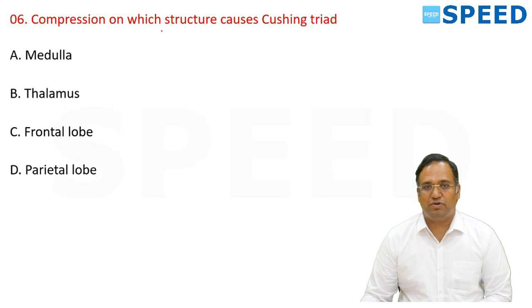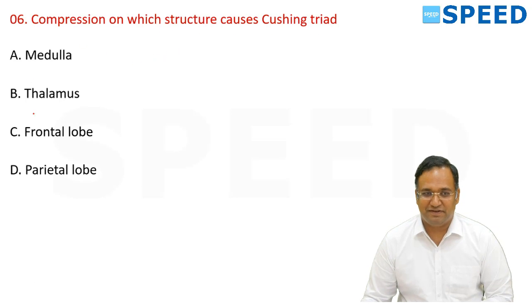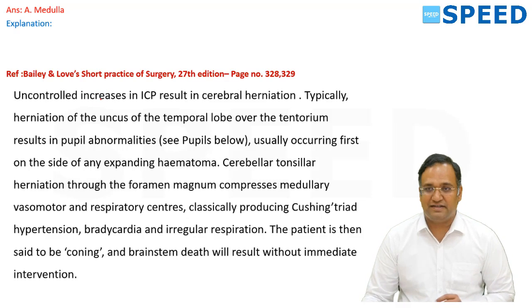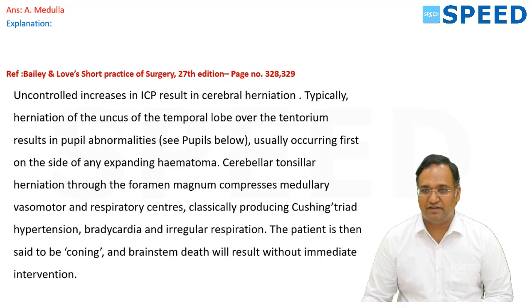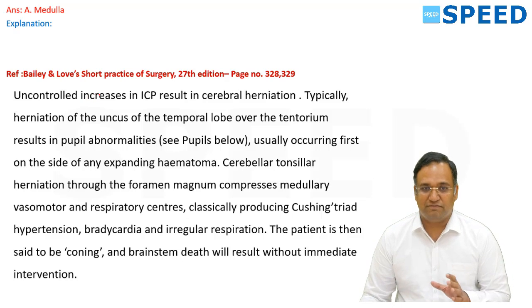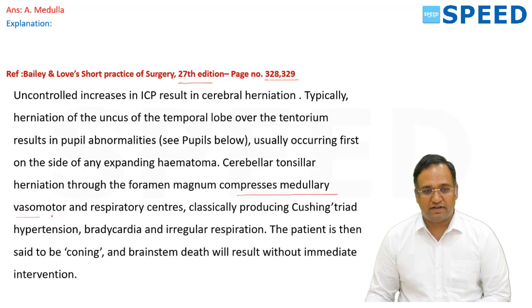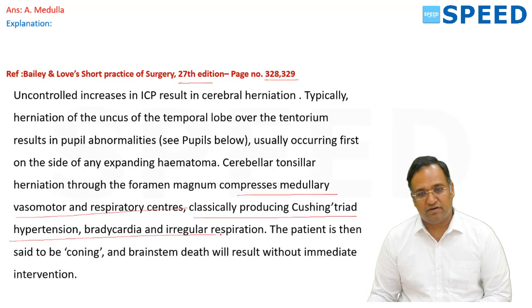Compression of which structure causes Cushing's triad? The answer is the medulla. As stated in Bailey and Love 27th edition, pages 328–329, cerebellar tonsillar herniation through the foramen magnum compresses the medullary vasomotor and respiratory centers, classically producing Cushing's triad: hypertension, bradycardia, and irregular respiration.